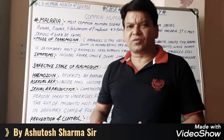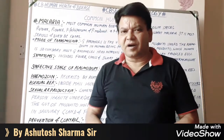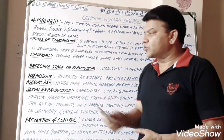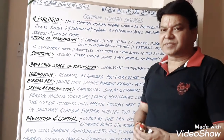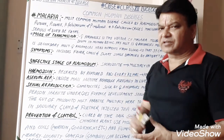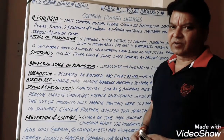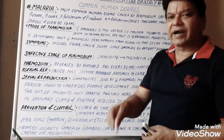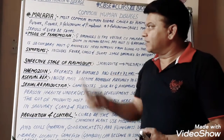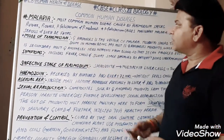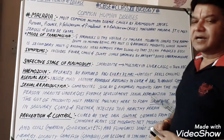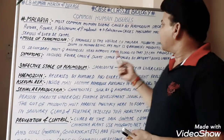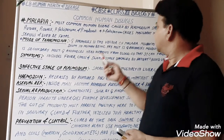Good morning students. Today we study about malaria. This is a very important topic and this question has been asked so many times in board examinations as a five marks question. Malaria is a kind of protozoan disease and is the most common human disease. It is caused by the Plasmodium species, which is a kind of protozoan.